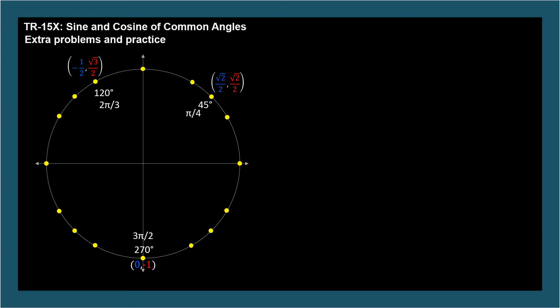This really shouldn't involve memorization, and with practice it shouldn't be much of a challenge. There are 17 points to know, with A and Q at the same point, representing the zero angle and the full rotation angle, respectively.